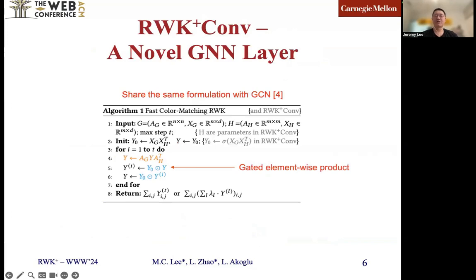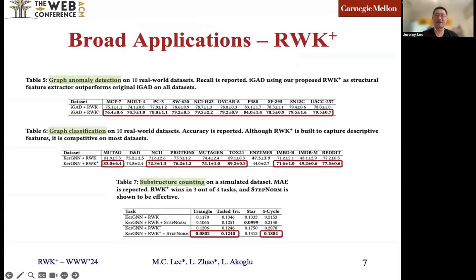Our efficient computation of RWK shares connections with GCN. With the formulation as the graph convolutional operation, we name this novel GNN layer as RWK+conv. With the learnable hidden graphs and the additional element-wise product operation, we expect it to bring better expressiveness than the GCN layer.